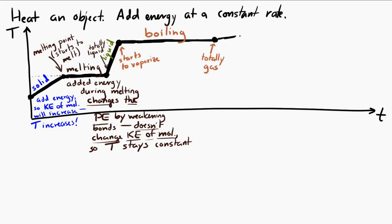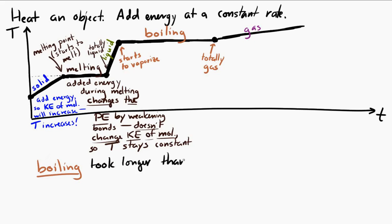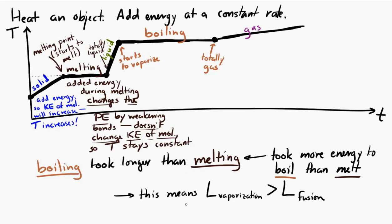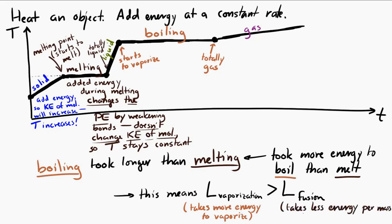Notice in this graph that the boiling took longer than the melting. If boiling takes longer than melting, and we're adding energy at a constant rate, that means it required more energy to boil the substance than to melt it. The liquid-to-gas phase transition required more energy than the solid-to-liquid transition. That means the specific latent heat of vaporization for this substance is greater than the specific latent heat of fusion. It took less energy to go from solid to liquid, so the specific latent heat of fusion is lower.